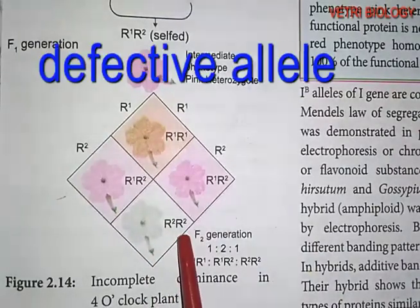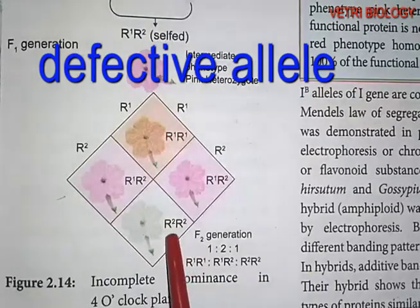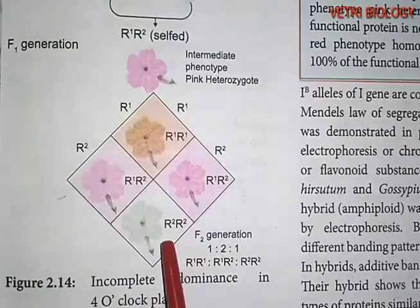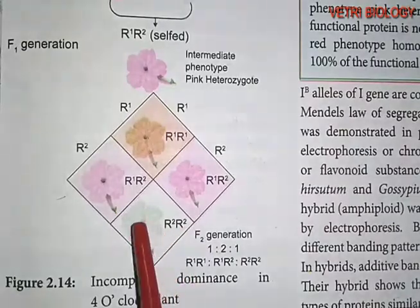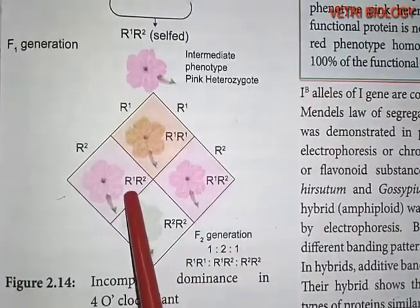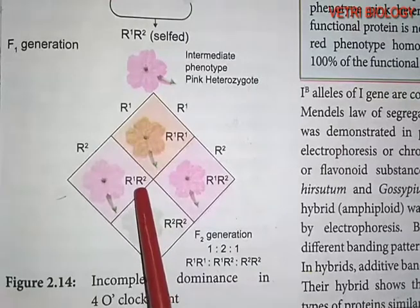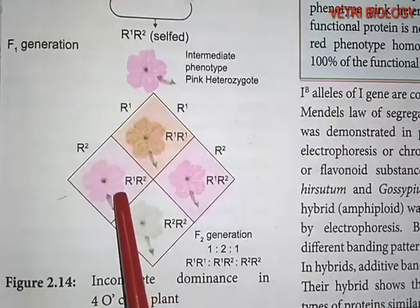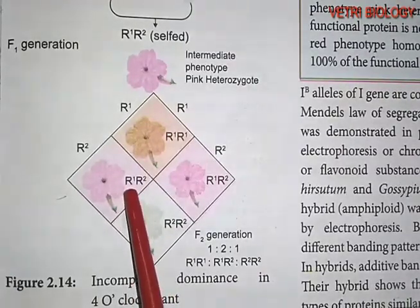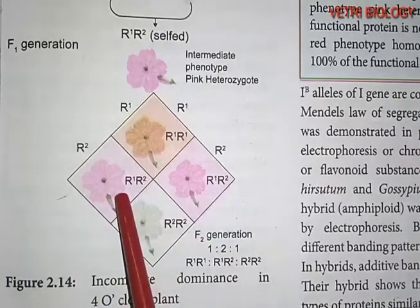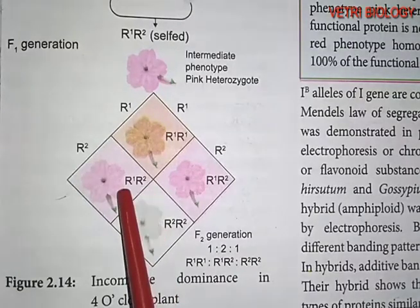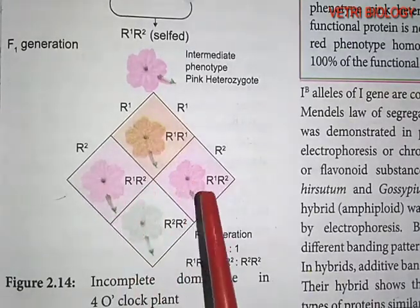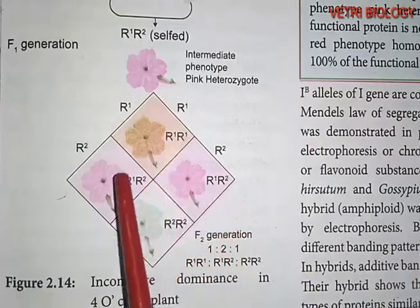The R2R2 alleles are defective alleles, so they will not produce red pigments and the plant gives a white colour flower. Two R2R2 alleles are needed for producing white colour flowers. In the R1R2 genotype, only a single R1 allele is present, so only about 50% of the red colour pigment enzyme is secreted. Therefore, the R1R2 genotype produces pink colour flowers. This is incomplete dominance, and there is no blending of genes.